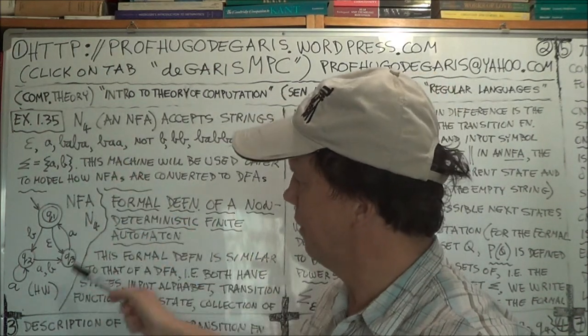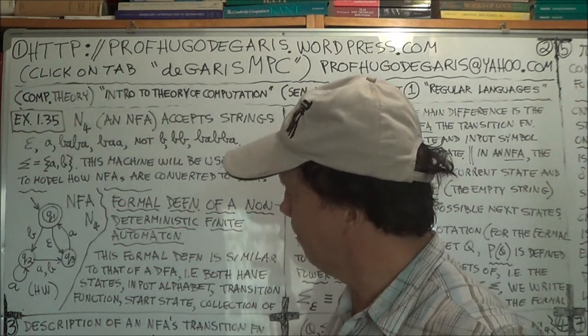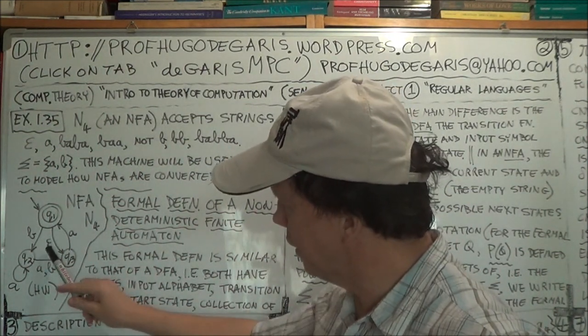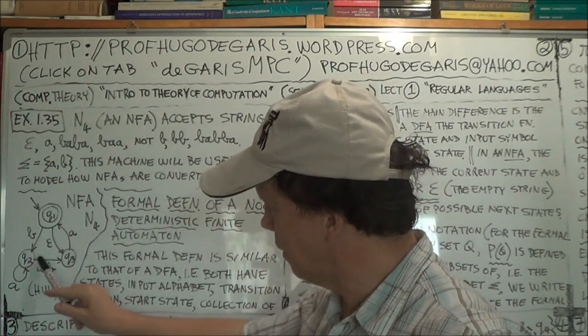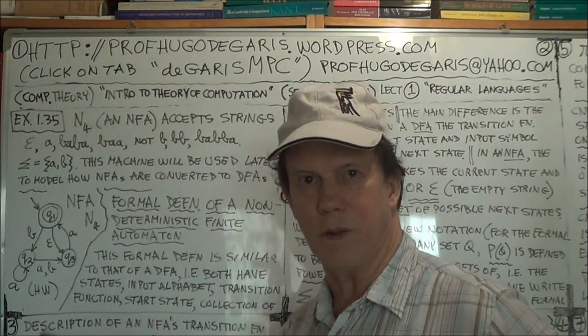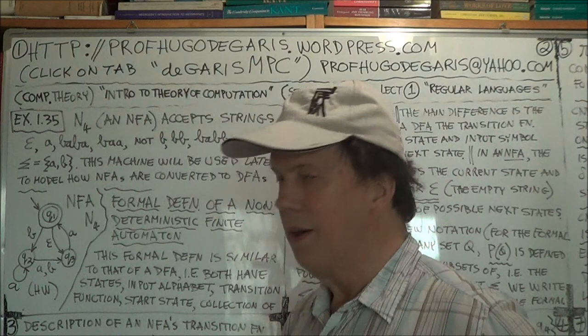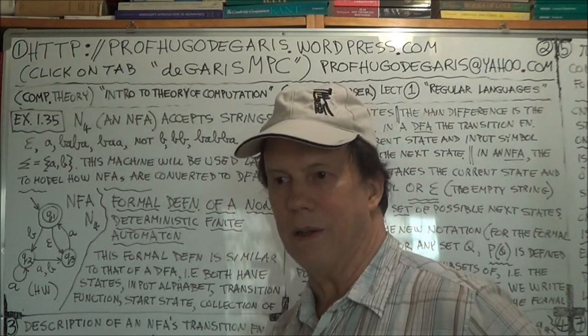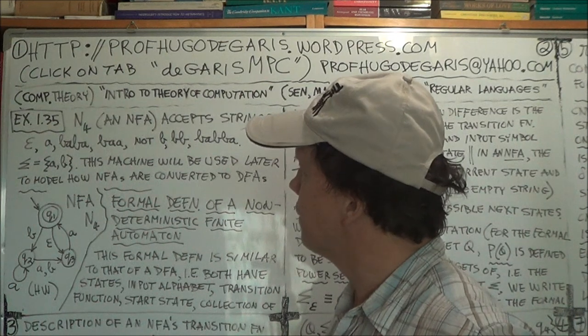So I'll give you, here's the state diagram, state transition diagram. And you will notice an eta here, and you will also notice an arrow here and here, both labeled A. So on two counts, the eta and the repetition, obviously a non-deterministic machine.